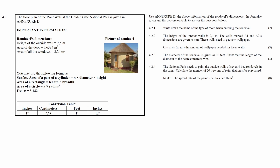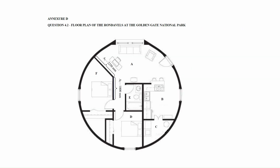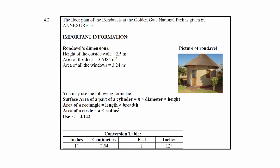Question 4.2 consists of 3 measurement questions and 1 maps and plans question designed to assess your understanding of surface area of a cylinder and areas of rectangles and circles. It also assesses your ability to convert from the imperial to metric system of measurement. You are given the floor plan of the Rondavel at the Golden Gate National Park. The height of the outside walls is 2.5 meters, the area of the door is 3.6384 square meters, and the area of all the windows is 3.24 square meters.